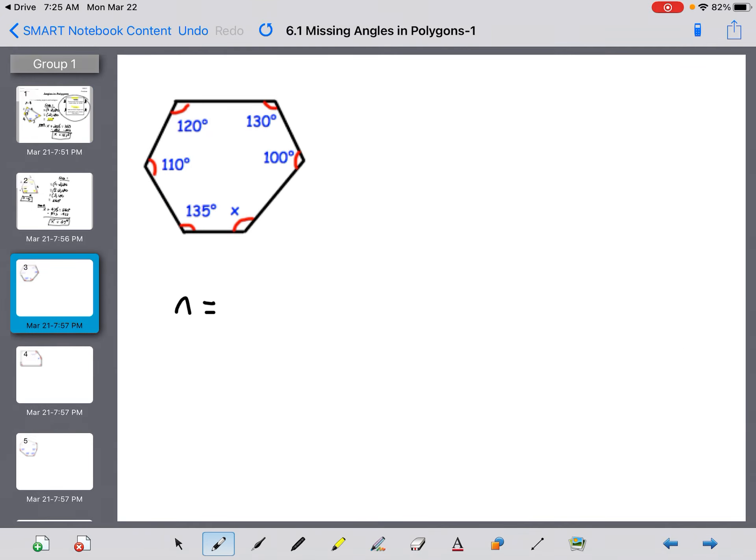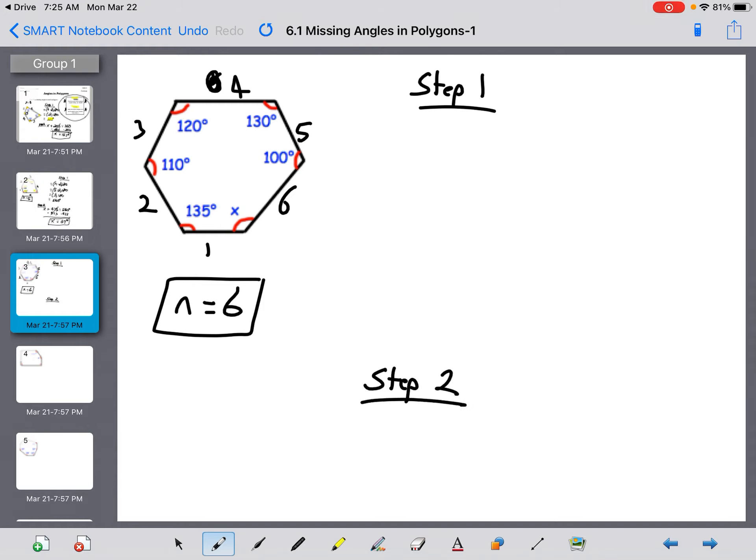As you keep going, n is going to change. So for your next one to get you started, n is going to equal six. You're going to plug that in for step one. Step one is n minus two times 180, which in this case is six minus two times 180. So you go from there. And whatever your answer is, we're going to add up these angles. It's going to be X plus add up those five angles and set it equal to your answer from step one.